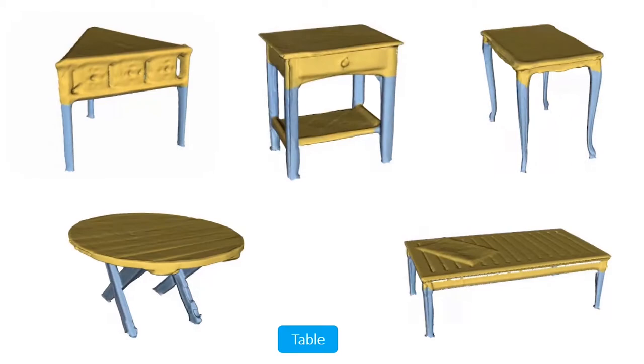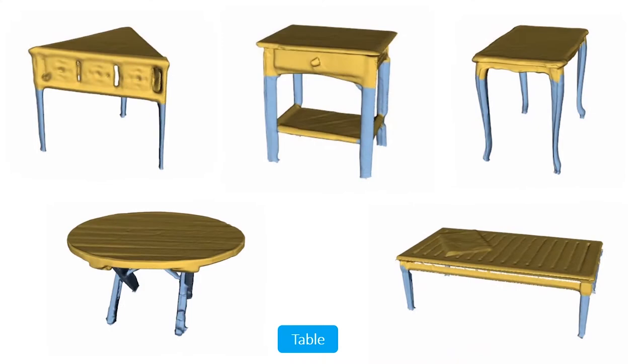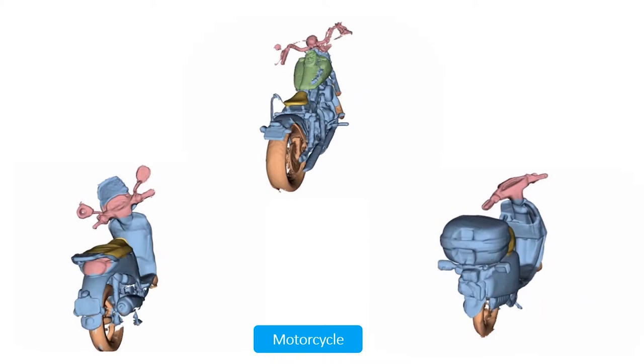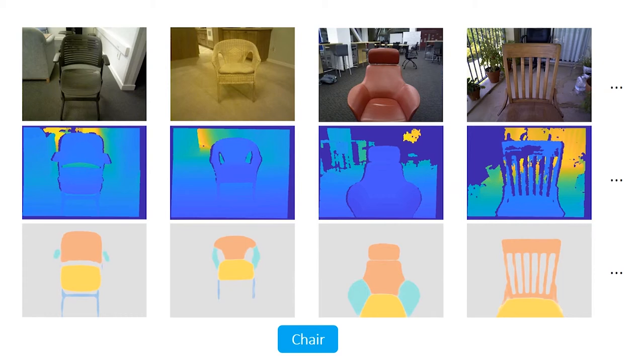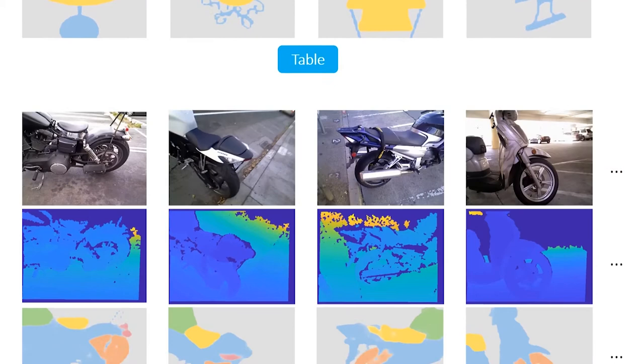The chairs and tables possess different types of topologies, reflected by the connections between object parts, while the motorcycles have many small parts around their engines and handlebars. Here we show example labeling results on some testing frames from those three classes, and we can see that the segmentations have high accuracy.